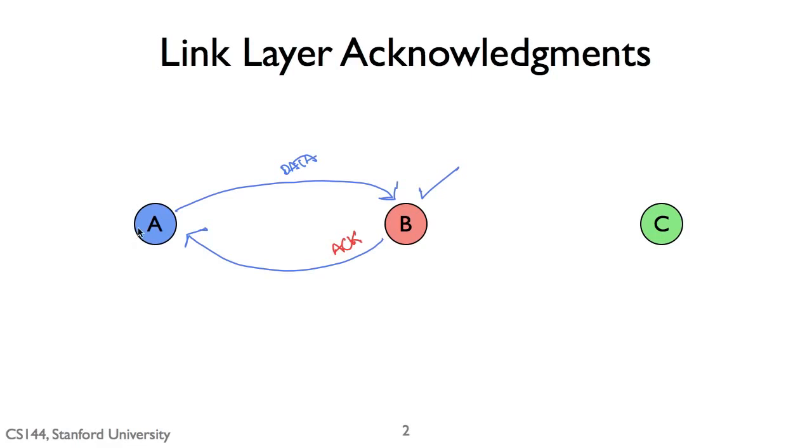And so the advantage of this is if A starts transmitting, say, a data packet to B, but at the same time C transmits a data packet and the two collide, then B will not send an acknowledgement. It doesn't successfully receive either packet. It sends no acknowledgement. A knows that it might need to retransmit or that it should possibly retransmit.